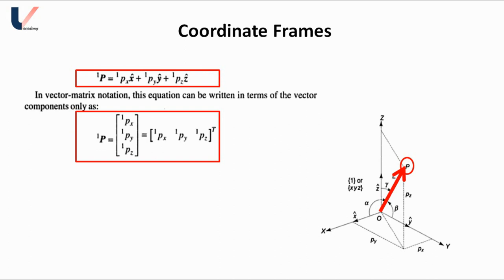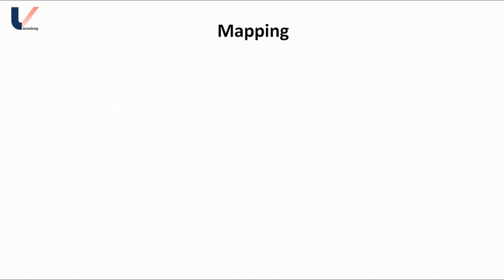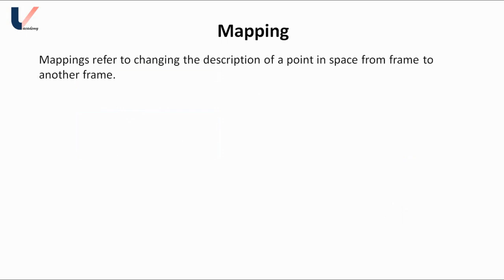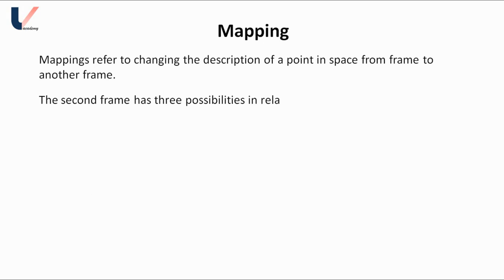Mapping refers to changing the description of a point in space from one frame to another. Suppose we have a point P in space defined with respect to frame 1. We have another coordinate frame named frame 2, and we want to find the coordinates of point P with respect to frame 2. This description of the point from frame 1 to frame 2 is achieved by mapping.